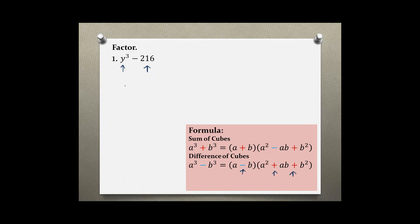First we need to find our a and b. So a would be just y, and b in this case is 6, because 6 cubed—6 times 6 times 6—equals 216.